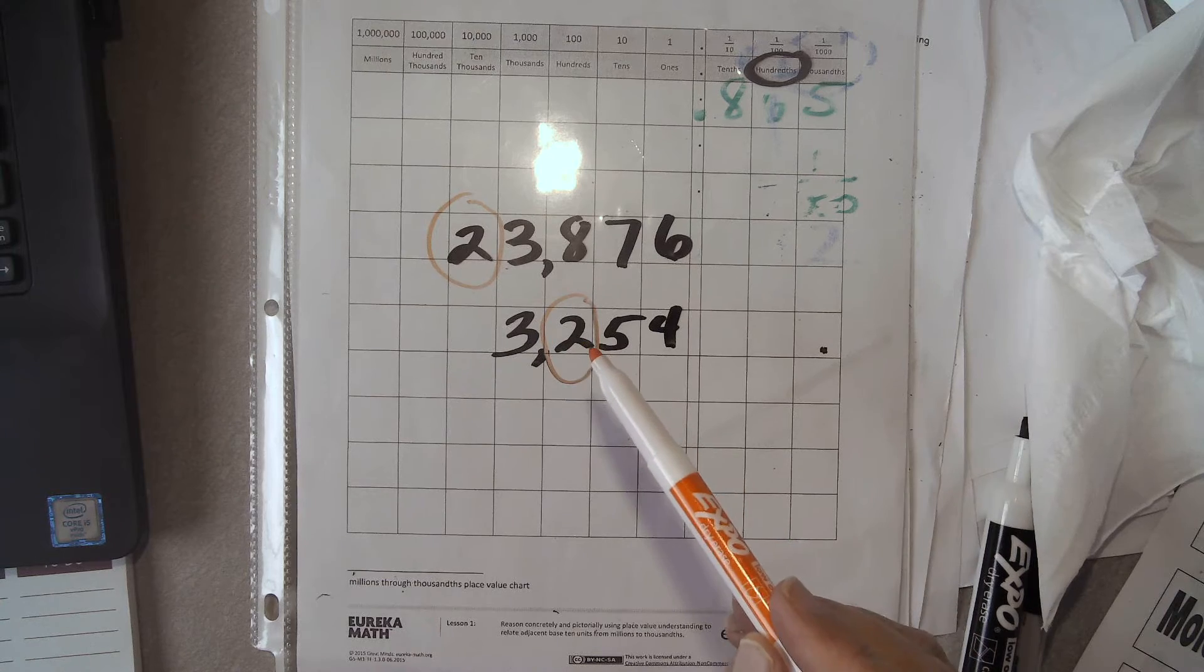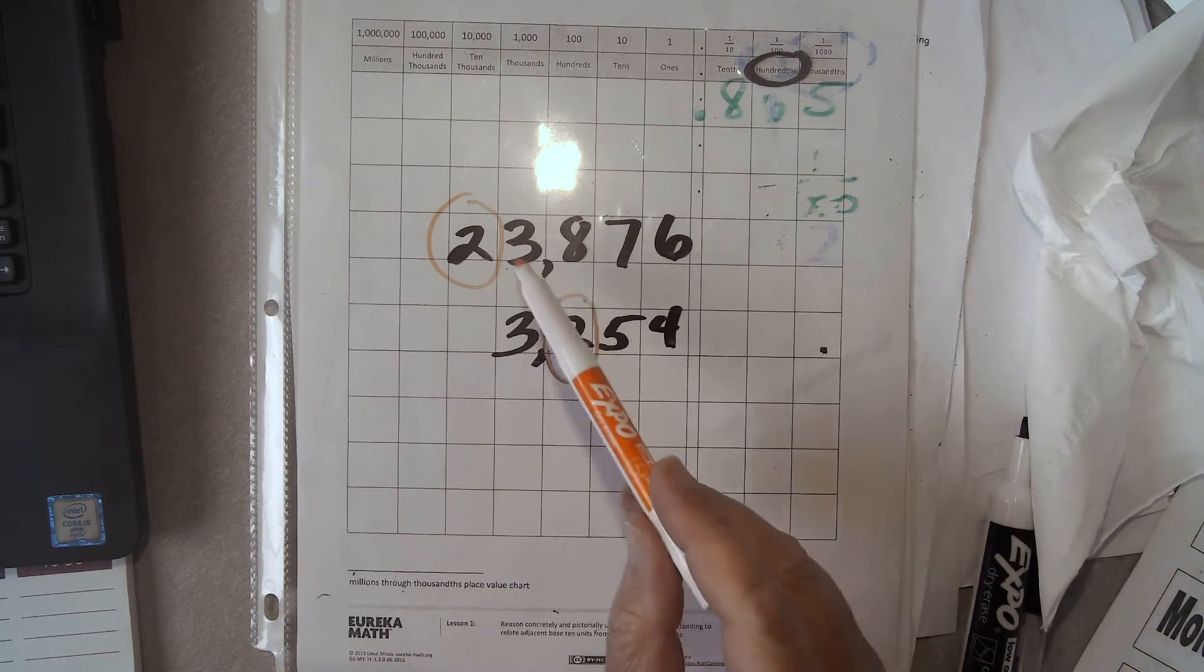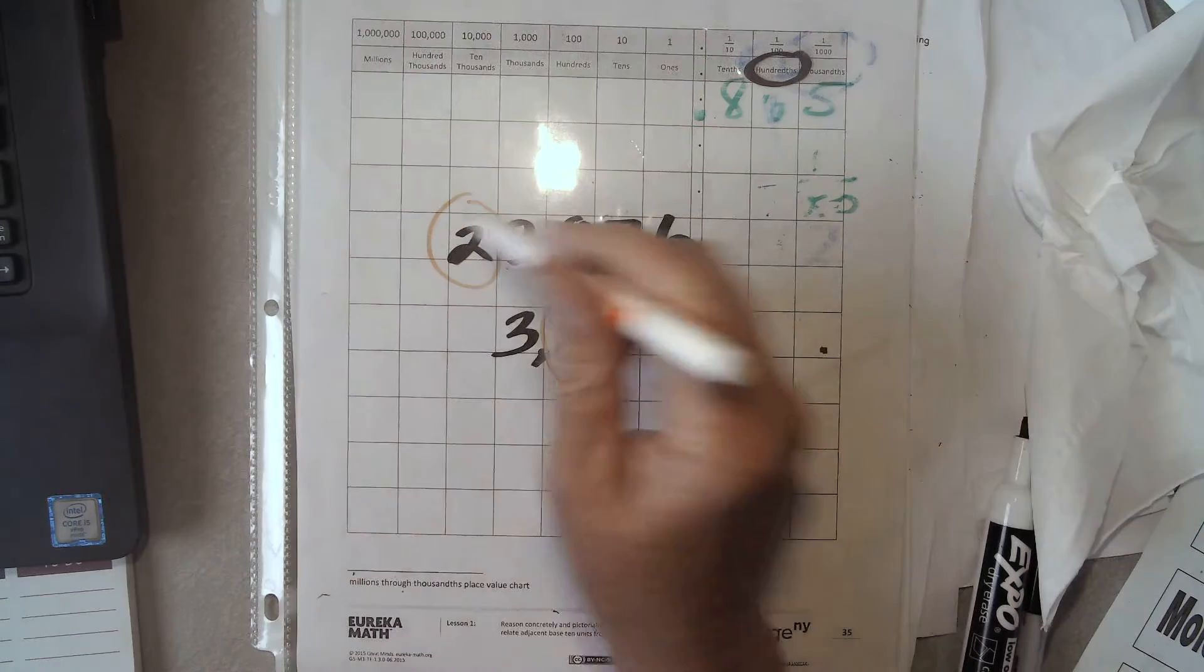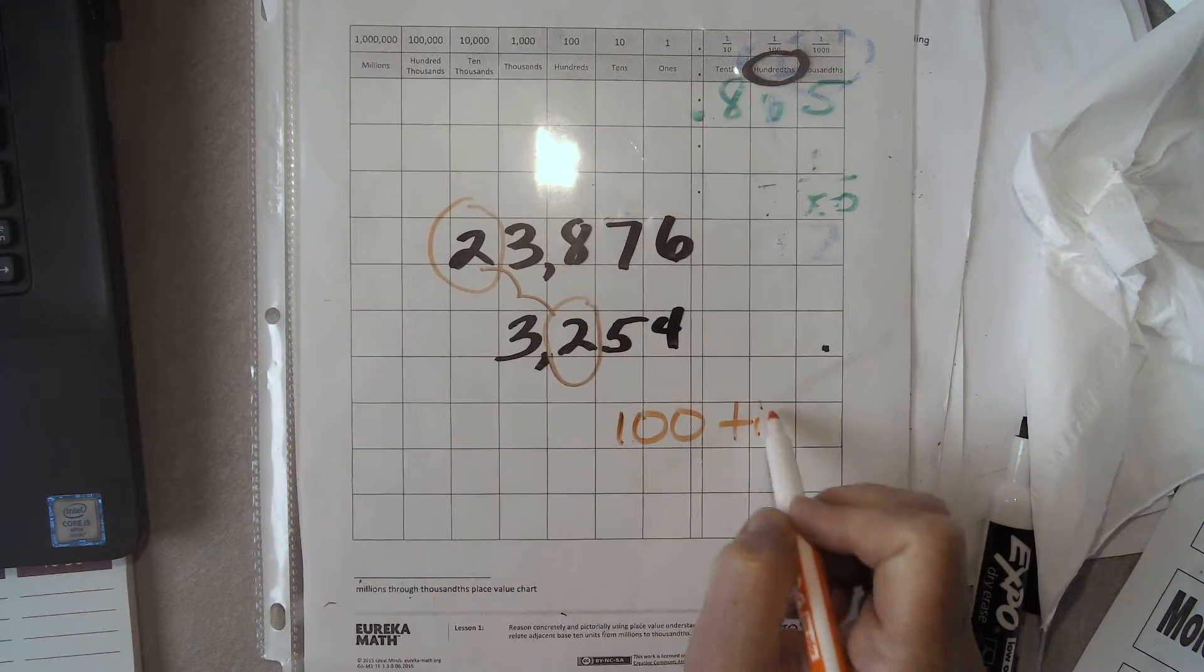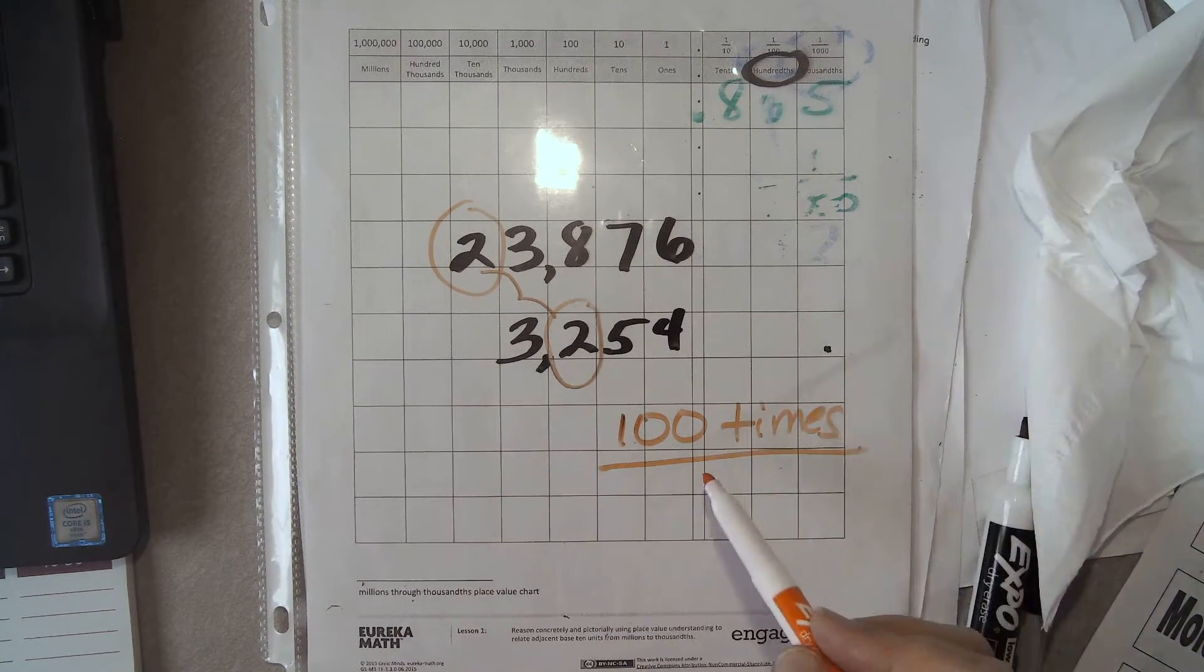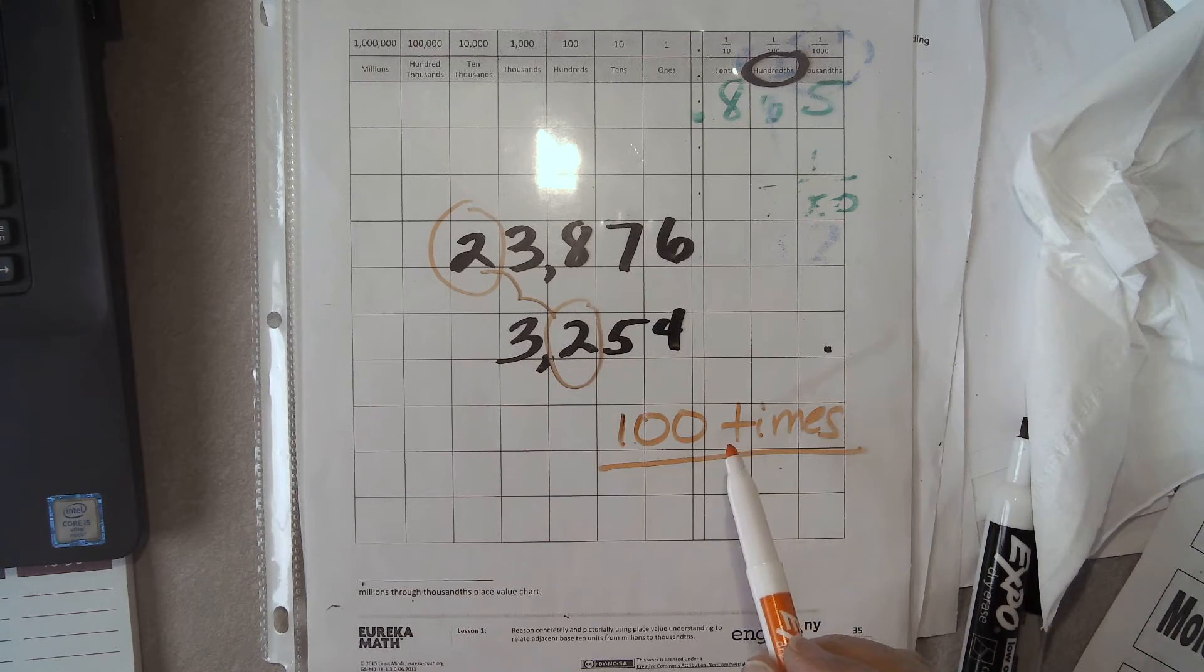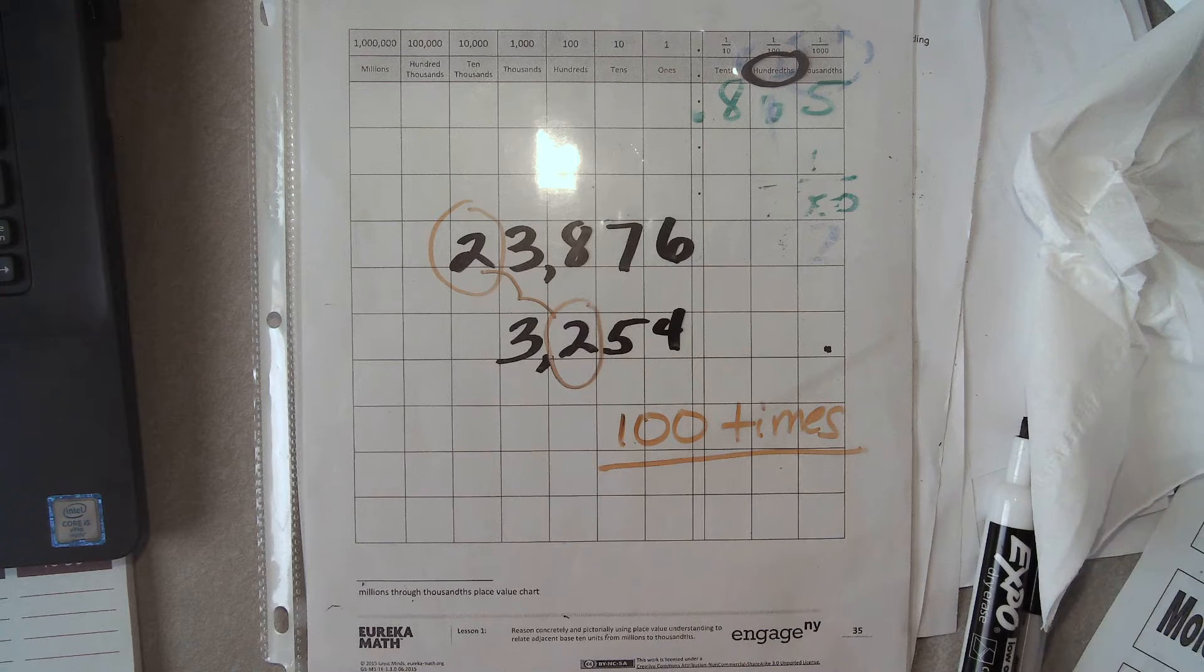So it says how many times greater is the value of the digit 2 in 23,000? Well, how many steps do I need to get here? 1, 2, 100 times. That's why this chart is so helpful because I can see it. I can see that I have to take two steps and I know for every step it's a multiplication of 10.